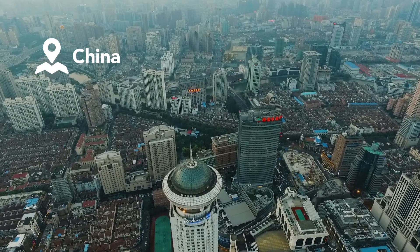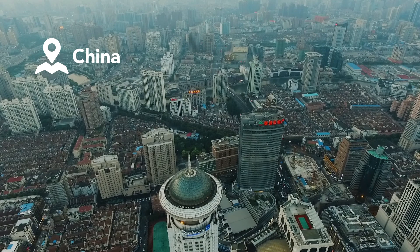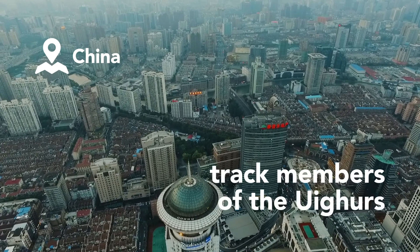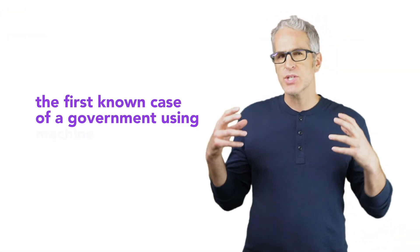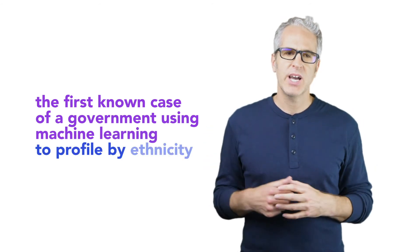And this brings us to China, where the government applies facial recognition to identify and track members of the Uyghurs, an ethnic group systematically oppressed by the government. This is the first known case of a government using machine learning to profile by ethnicity.